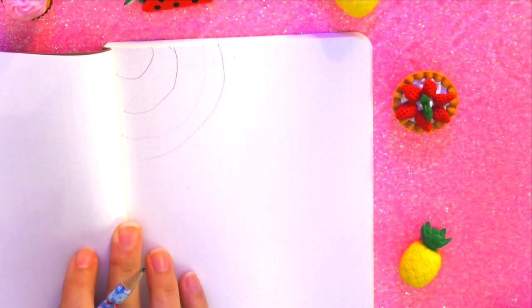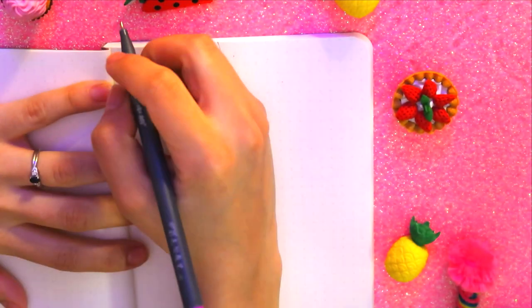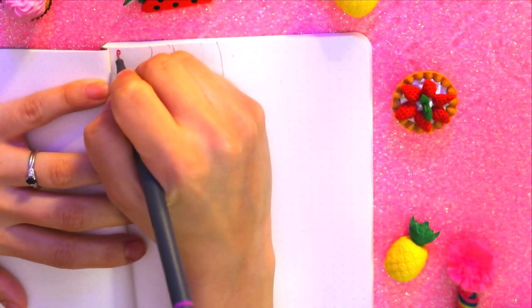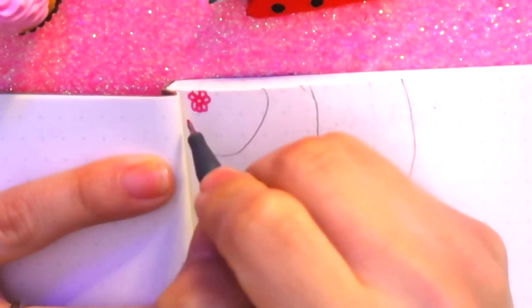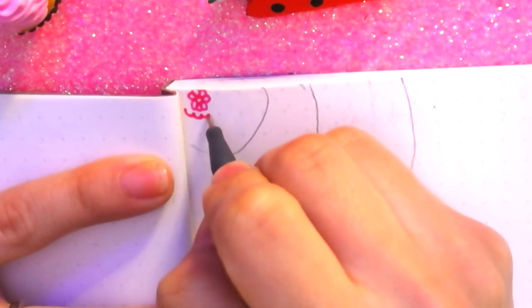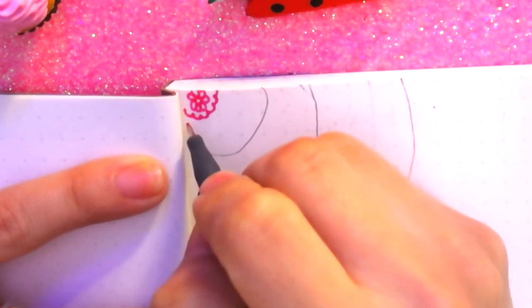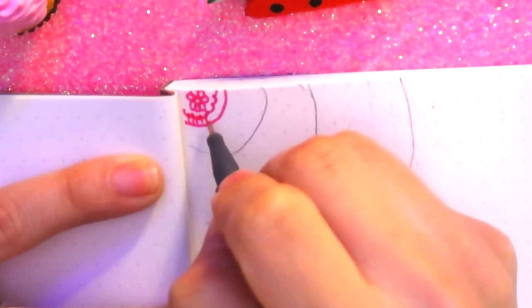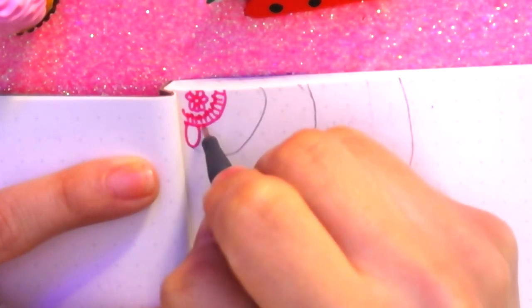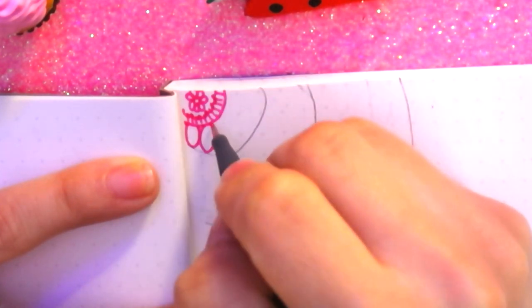And now for our mandalita, here I'm going to start making a flower. As you can see, I'm going to try to do it more slowly so that you can understand how they're done. You can guide yourself with your compass or do it freehand as you can see, but the truth is that it doesn't matter, they still look very beautiful.